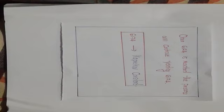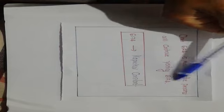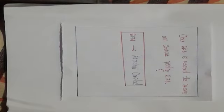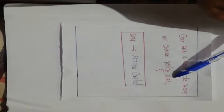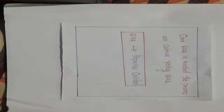Now it's your turn to choose any four-digit number and try this on that number. You will see the magic of mathematics — you will reach the number 6174 in 2, 3, or 4 steps. This is the magic of mathematics, and the star of mathematics today is 6174. Thank you.